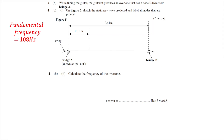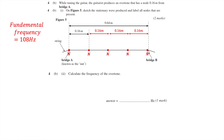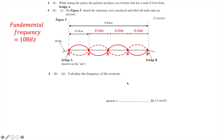In the second exam question, the fundamental frequency is 108 Hz. We're told the distance between nodes is 0.16 m, so we place the remaining nodes accordingly and draw the waveform. The second part asks for the frequency of the overtone — this is the fourth harmonic, which is four times the fundamental frequency, giving 432 Hz.